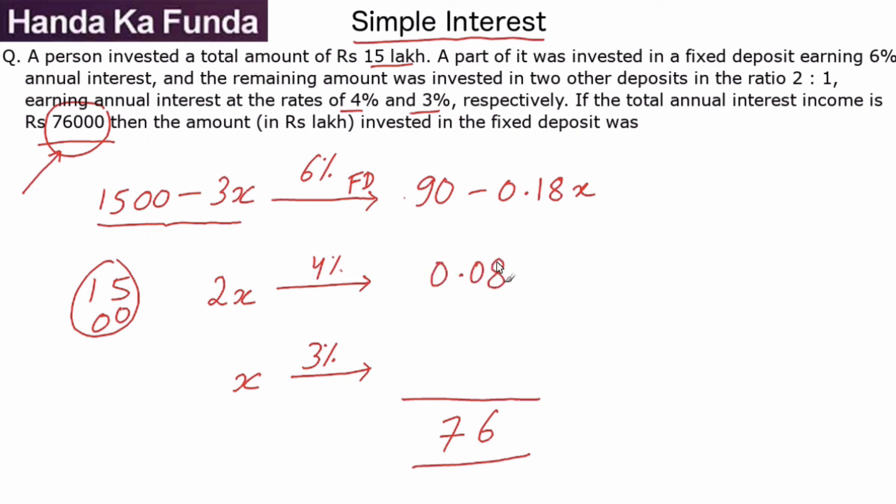4% of 2x is 0.08x and 3% of x is 0.03x. We know that this grand total is coming out to be 76 thousand.